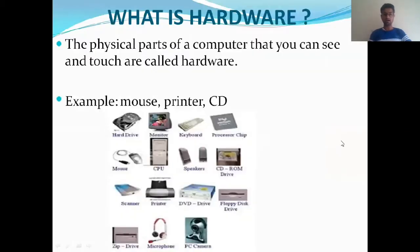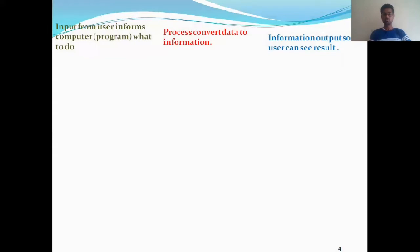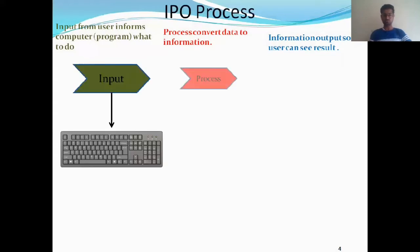Hardware is the physical part of a computer that you can see and touch. Some examples include the mouse, printer, CD, DVD, CPU, and monitor. All of these are hardware components — devices that you can touch.